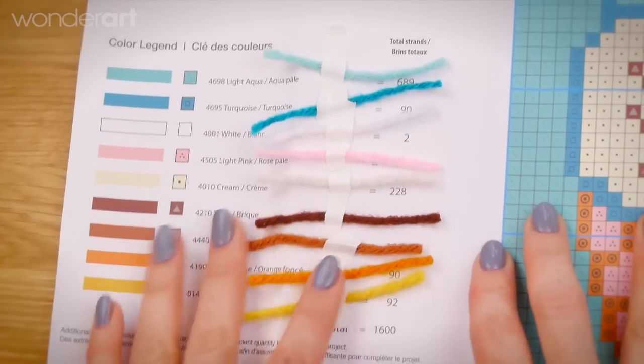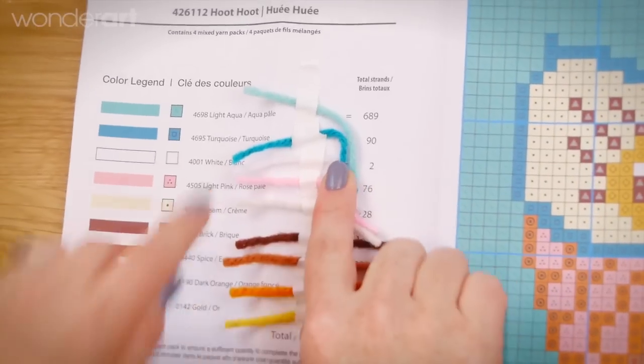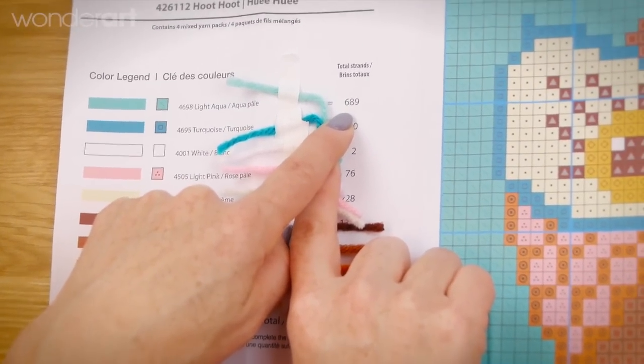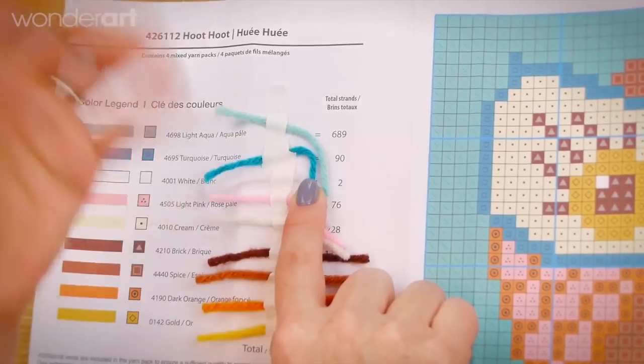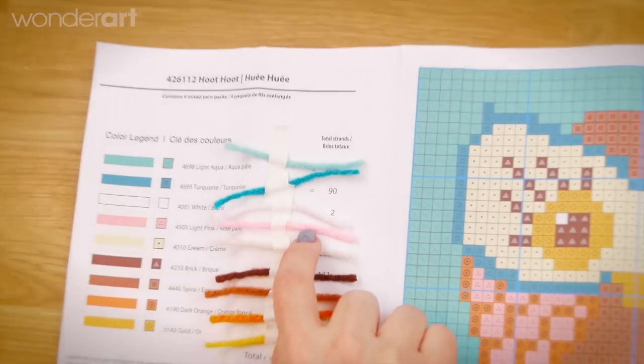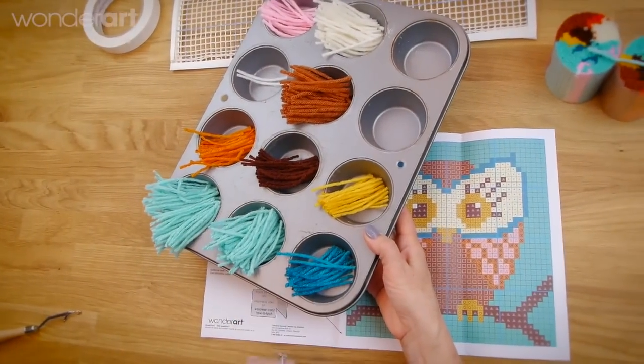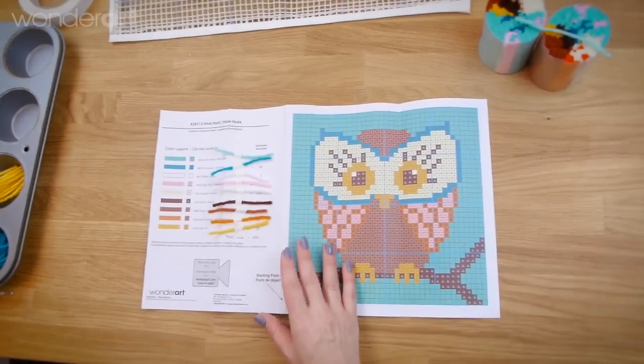If you get confused by a couple colors that are similar you can also look at strands. There's the total strand number and so you'll be able to see 689 strands versus the next color is 90, they're both in the turquoise family but you'll be able to look and see that one is significantly more yarn than the next.